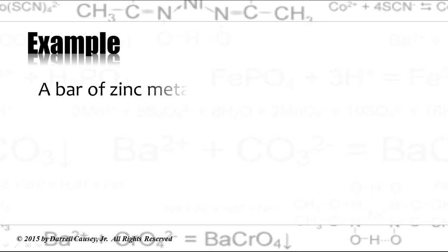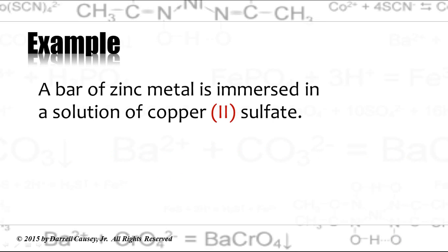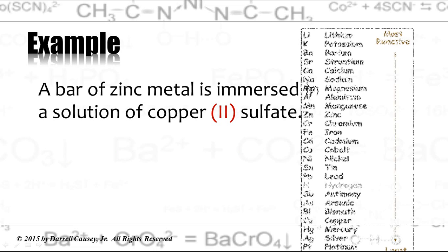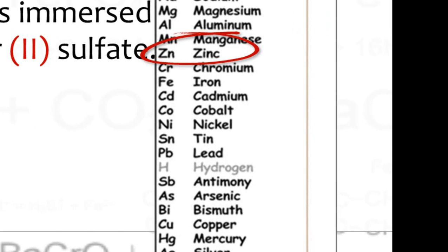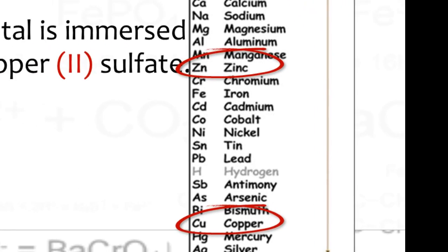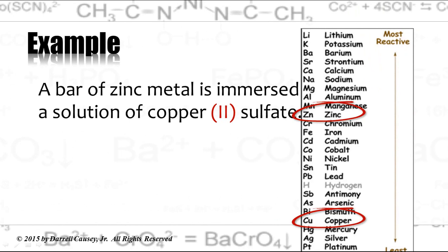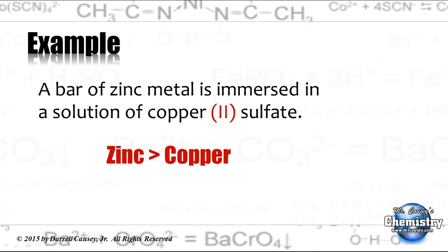So let's look at an example. A bar of zinc metal is immersed in a solution of copper 2 sulfate. And the first thing I want to do is go to my reactivity table and make sure that zinc will be more reactive than copper, and it is. So they are going to change places. Zinc is greater than copper.